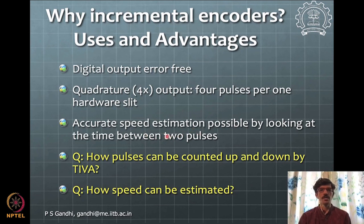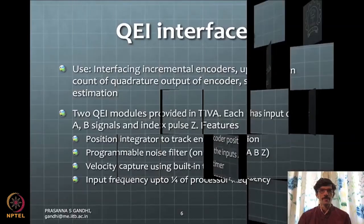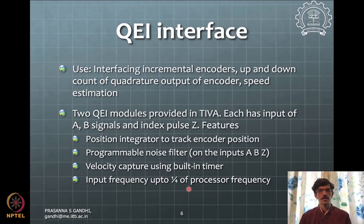There are two ways to estimate speed: look at the time between two pulses, or count the number of pulses in a given amount of time. The QEI interface in TIVA is designed for up and down counting of incremental encoders as position changes and for speed estimation.